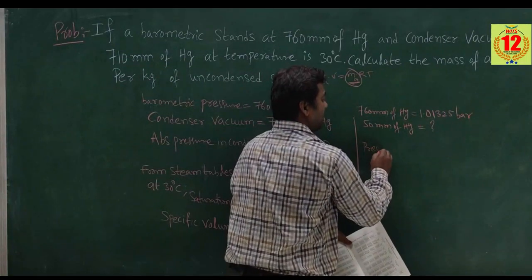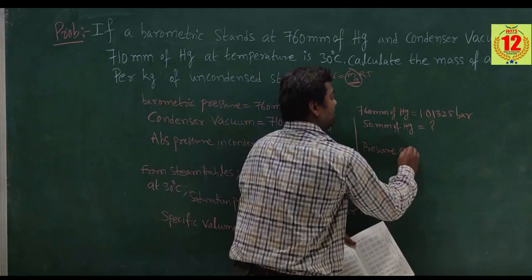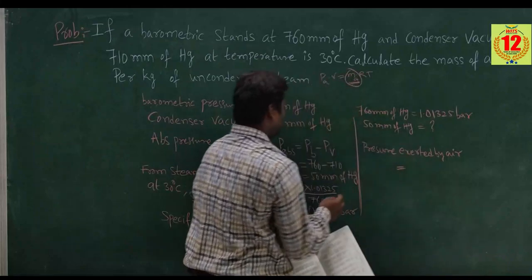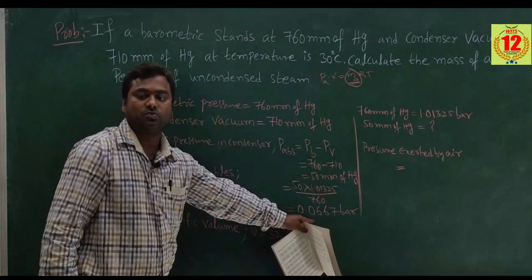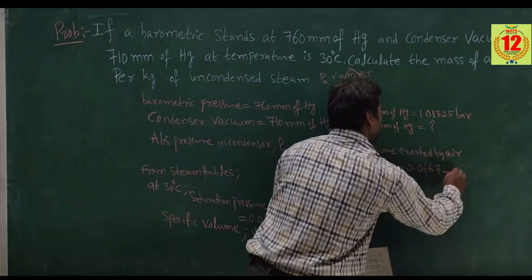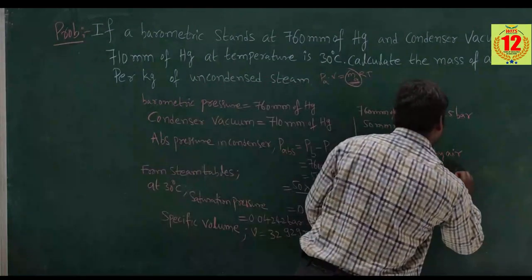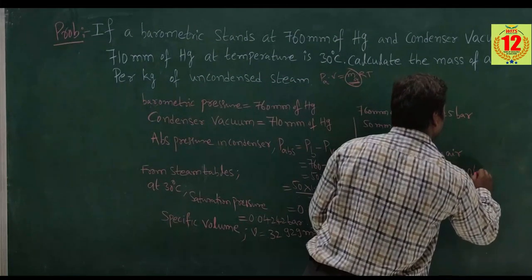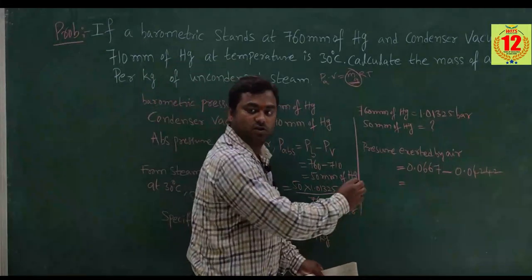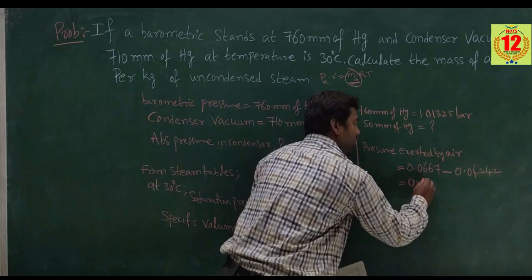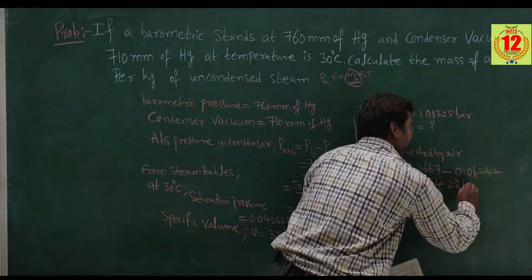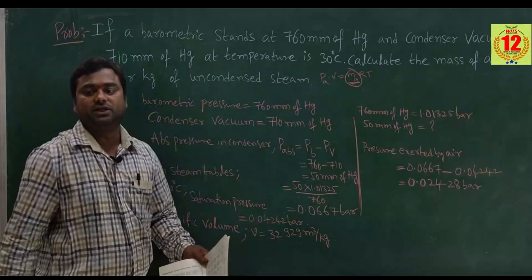The pressure exerted by the air can be calculated as: total absolute pressure 0.0667 bar minus the steam saturation pressure 0.04242 bar, which equals 0.0448 bar.